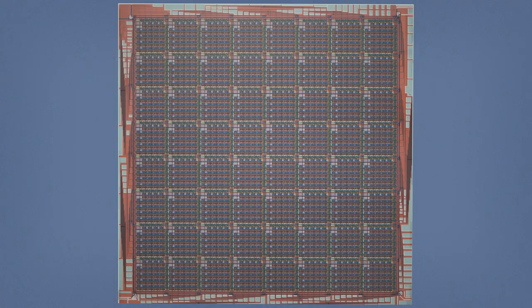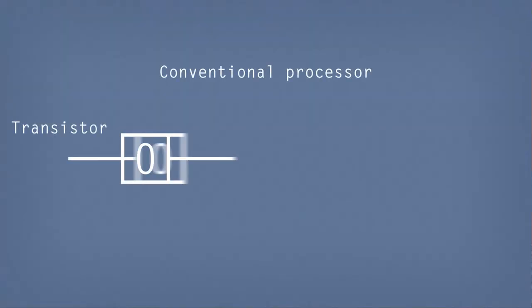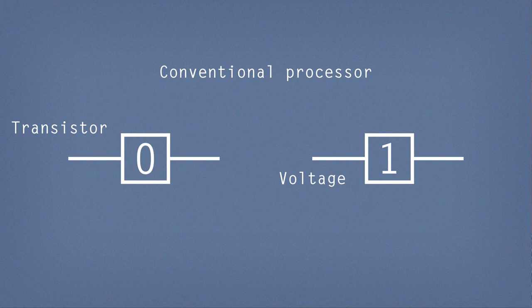So this is a blueprint of one of our processors. The design and construction of one of these is not really that different from that of a conventional processor but a really important difference is that on a conventional processor the ones and zeros are encoded as voltages and currents on that chip.